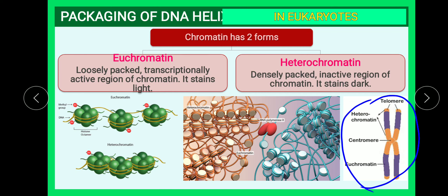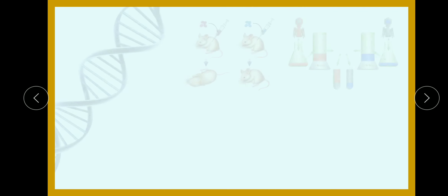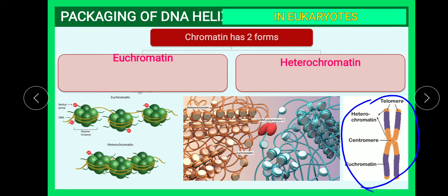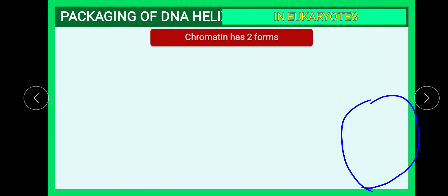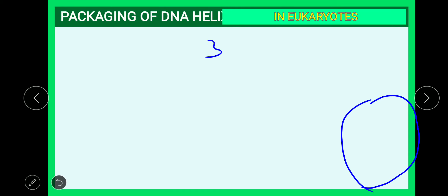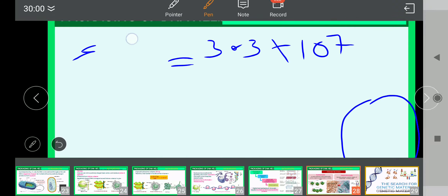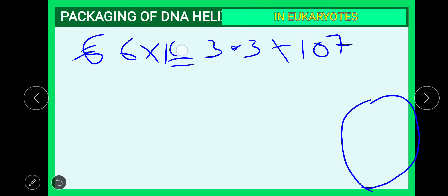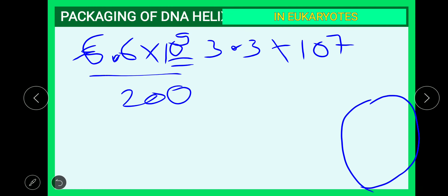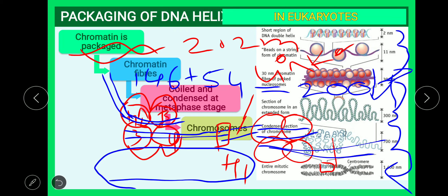These chromatid parts — euchromatin and heterochromatin — are seen within the chromosome. Before moving to the next concept, this completes our study of DNA packaging. The total number of nucleosomes in a cell is 3.3 × 10⁷, calculated as 6.6 × 10⁹ total base pairs divided by 200 base pairs per nucleosome.